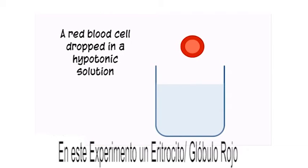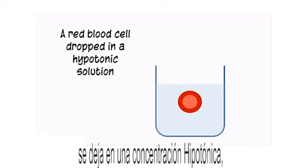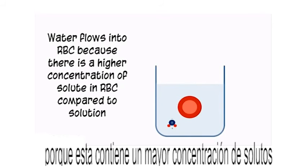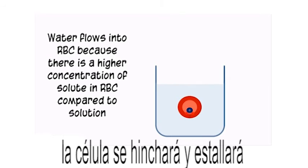In this experiment, a red blood cell is dropped into a hypotonic solution. Water will flow into the red blood cell because the cell contains a higher solute concentration. The cell will swell and burst.